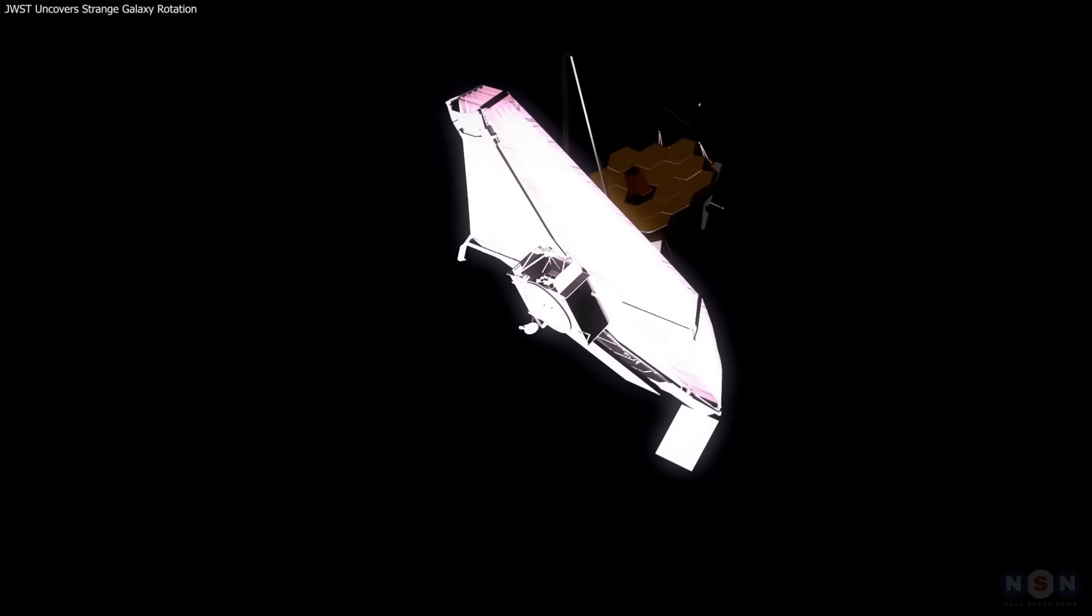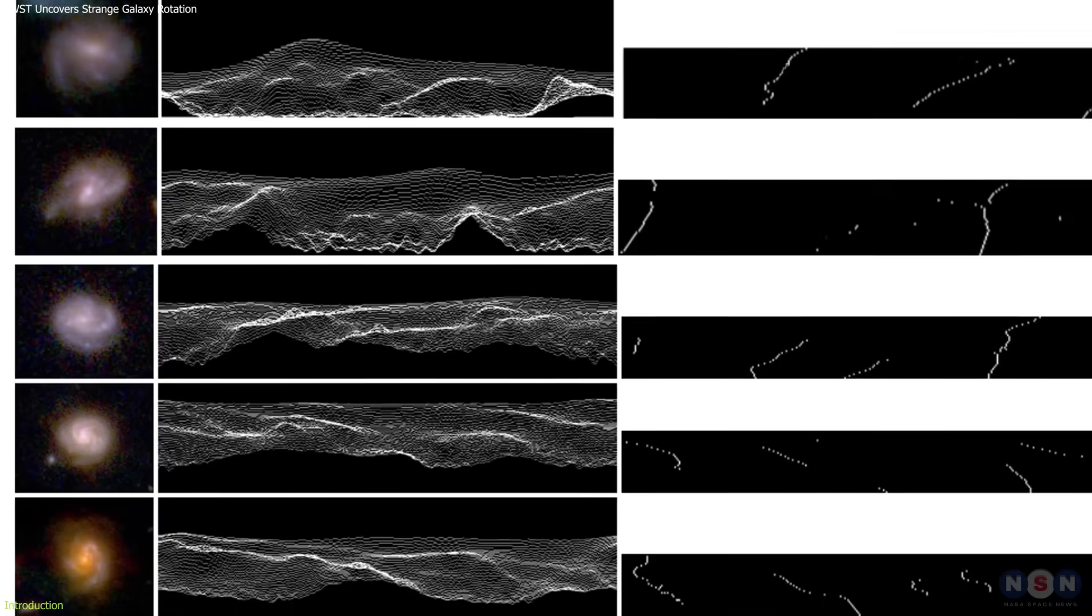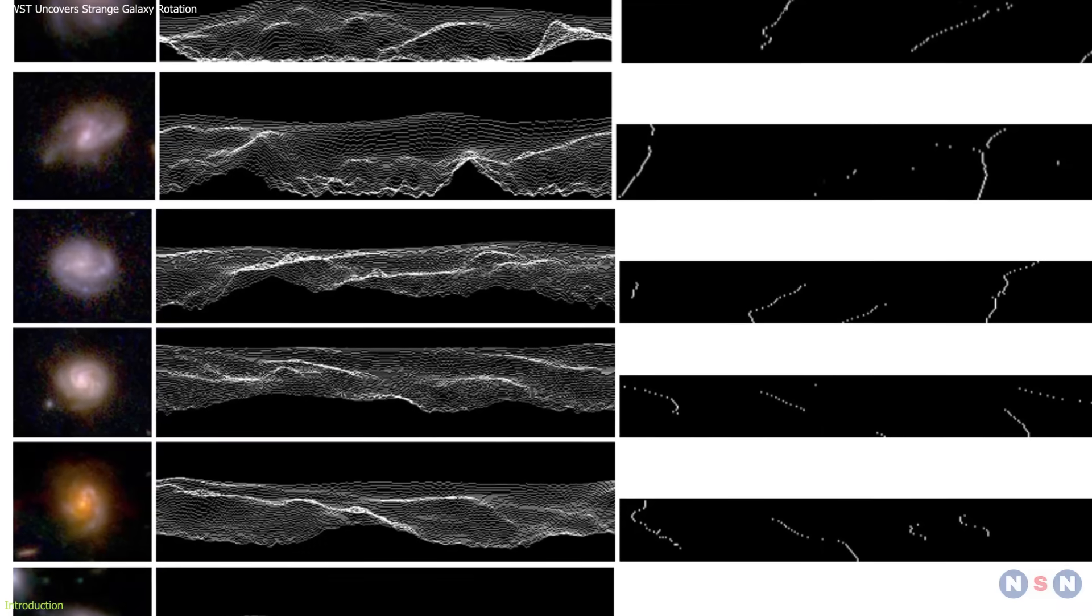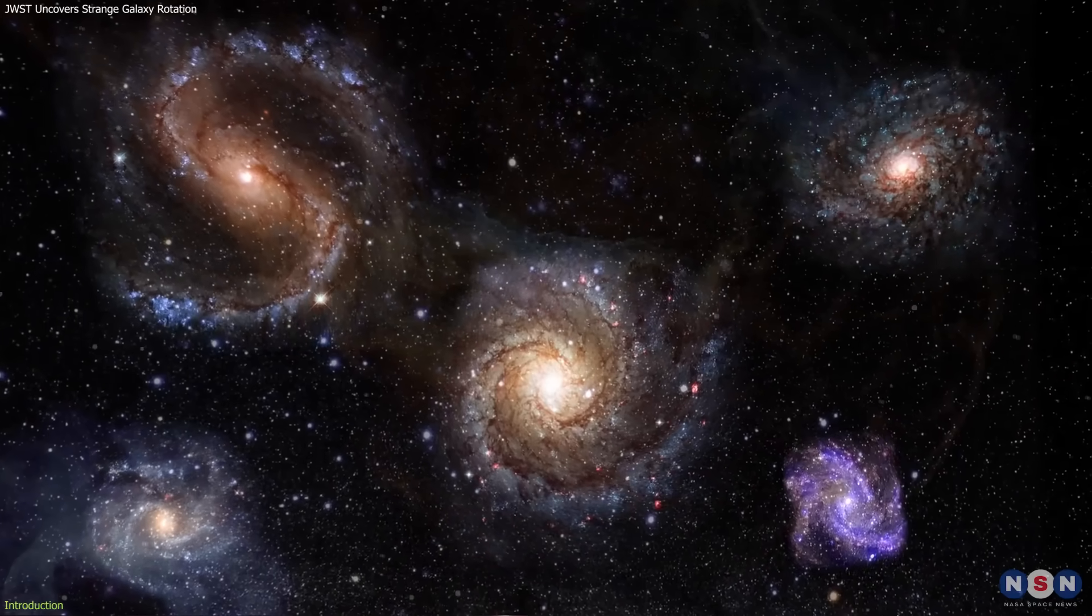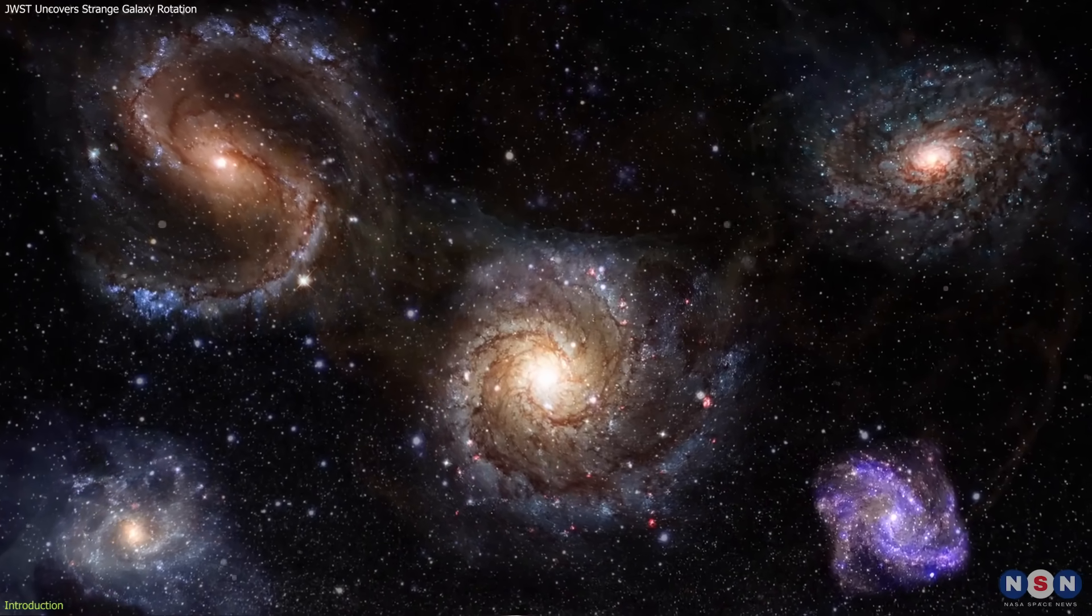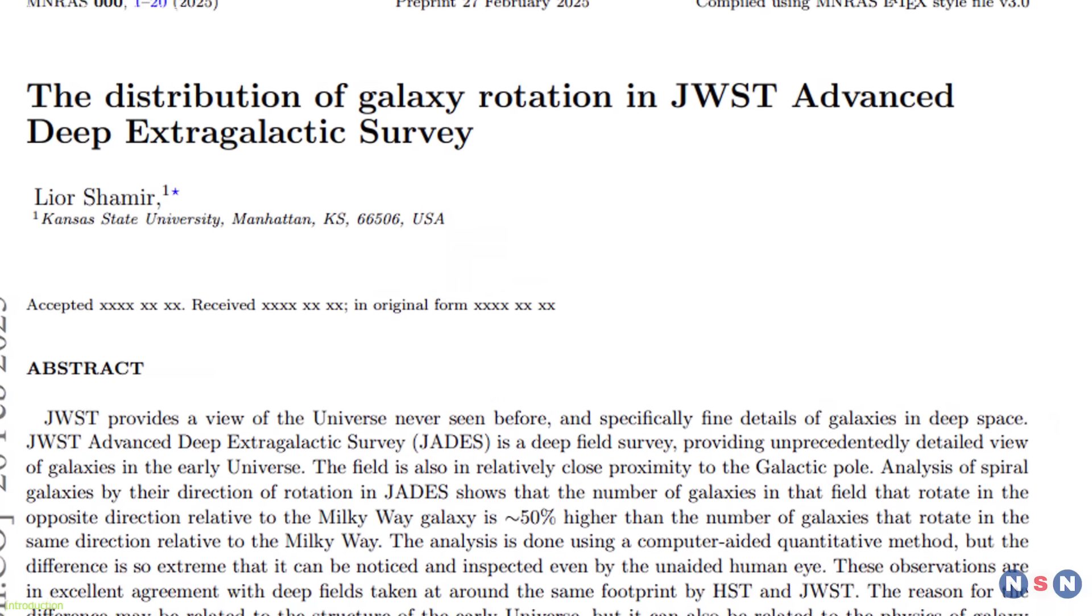Astronomers using the James Webb Space Telescope have uncovered a puzzling pattern in some of the universe's oldest galaxies. Most of them appear to rotate in the same direction. This finding wasn't expected.